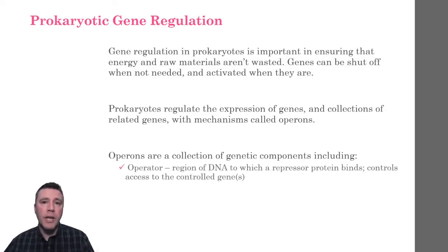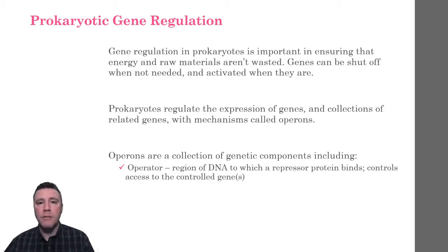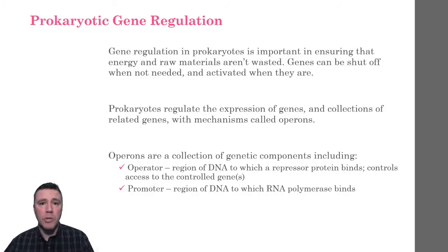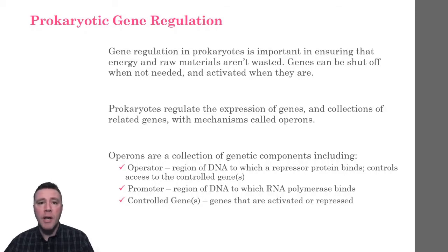The switch segment of the DNA is called the operator. The operator, which is part of the promoter in some operons, exists just upstream of the controlled genes and controls the access of RNA polymerase to those genes. The promoter is the region of DNA to which RNA polymerase will bind to start transcription. Just downstream of the promoter and the operator are the genes that are controlled by the operon, and are either activated or deactivated depending upon the function of the operon.